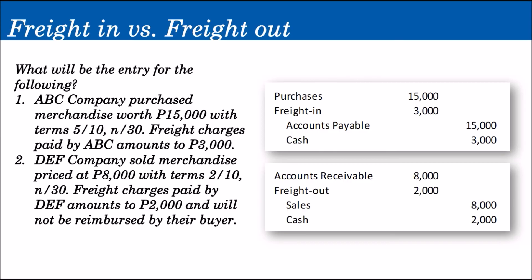Number two: DEF Company sold merchandise priced at $8,000 with terms 2/10, n/30. Freight charges paid by DEF amount to $2,000, and they will not be billing the buyer for it — they will shoulder the delivery expense on behalf of the buyer. The entry is: debit Accounts Receivable $8,000, debit Freight Out or Delivery Expense $2,000, credit Sales $8,000, and because they paid the delivery expense, credit Cash $2,000.